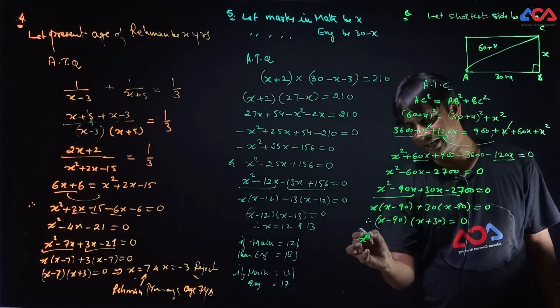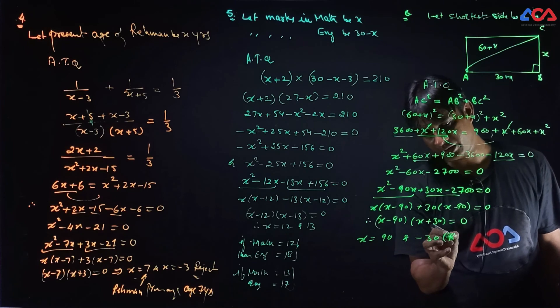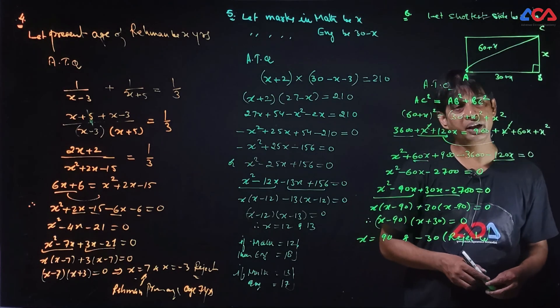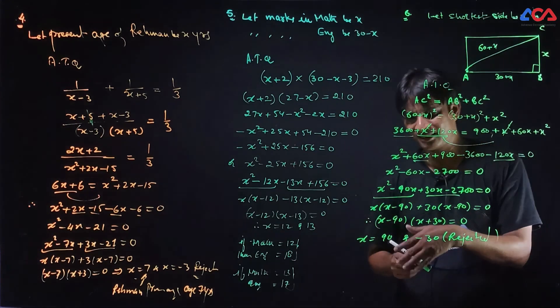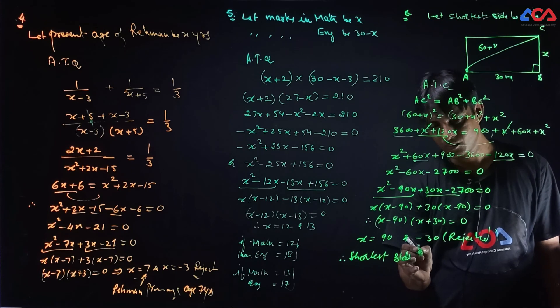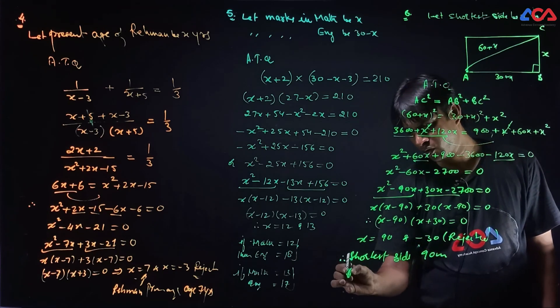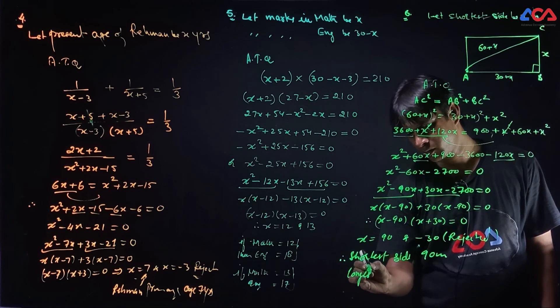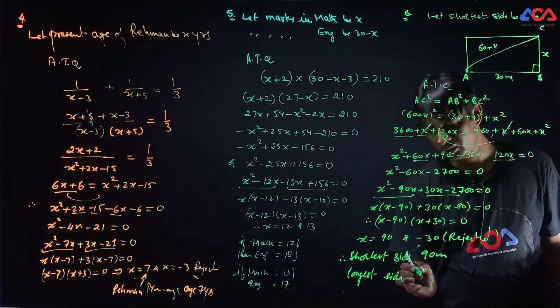Now see, therefore x value is 90 and minus 30 rejected. Because length cannot be negative. So if our shortest side is x. Therefore shortest side is 90 meter. Longest side is 30 more, then 120 meter.